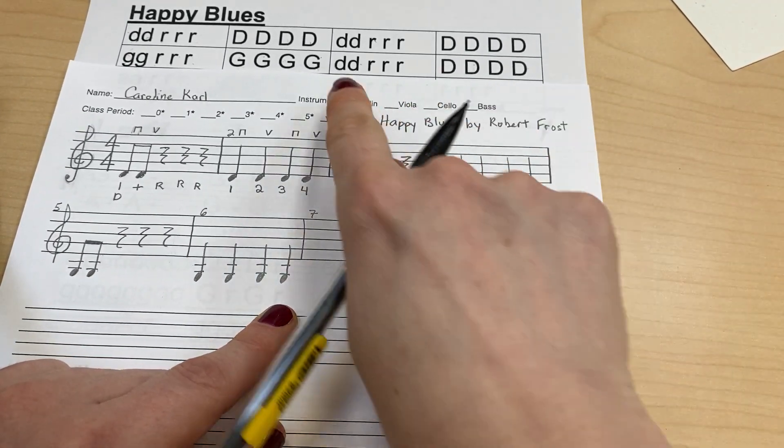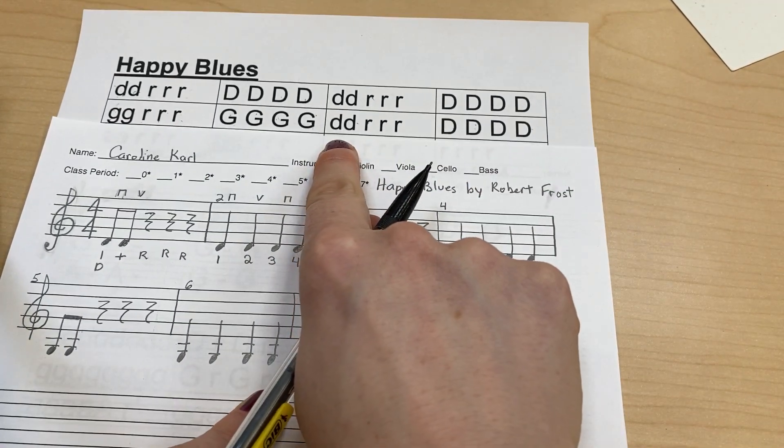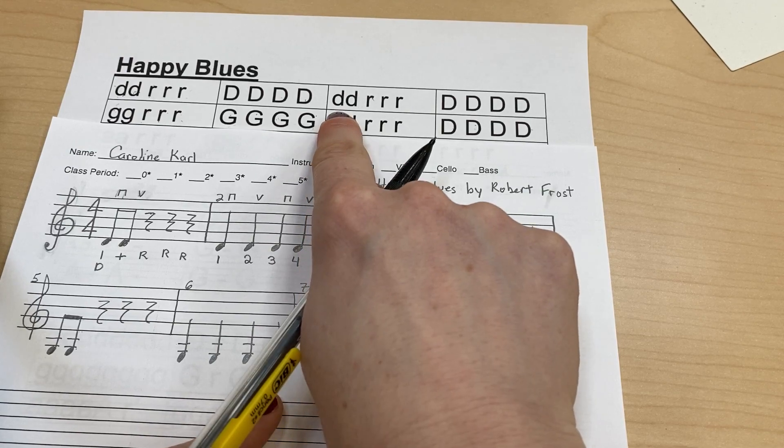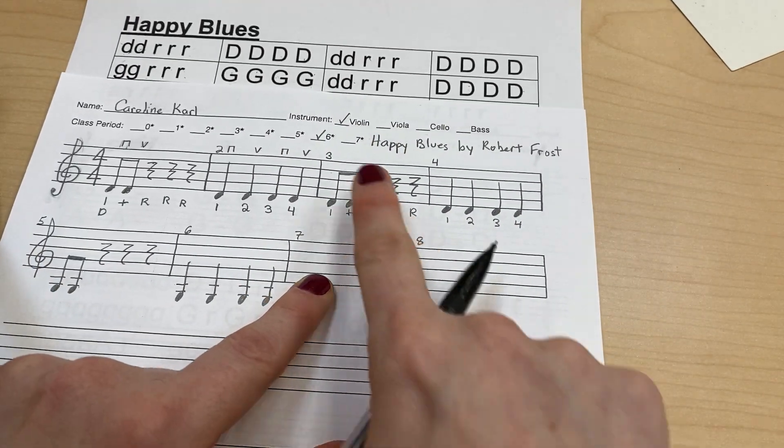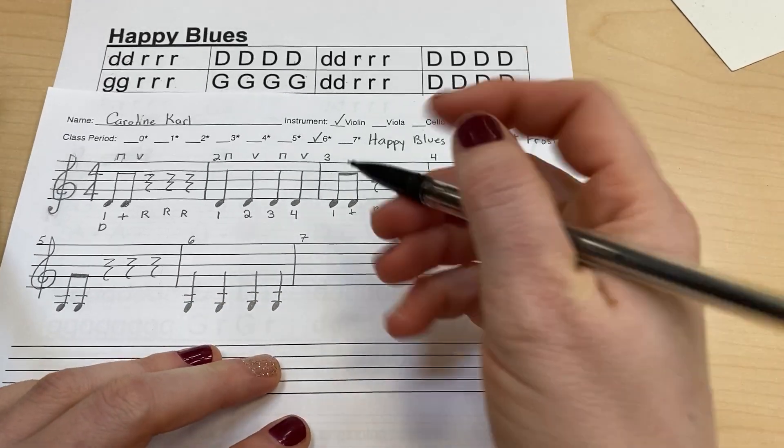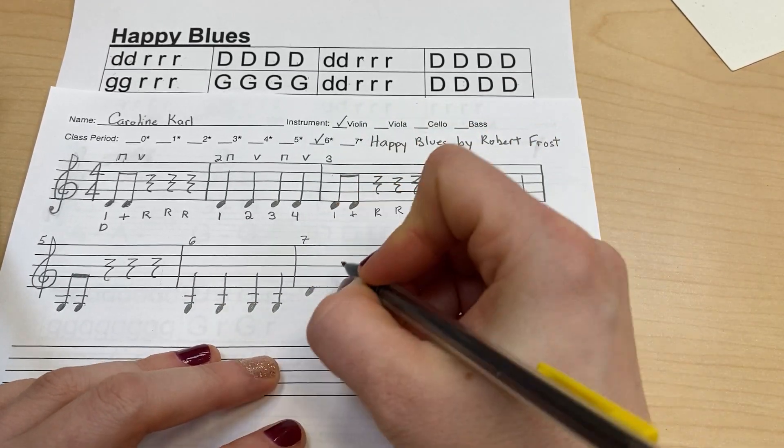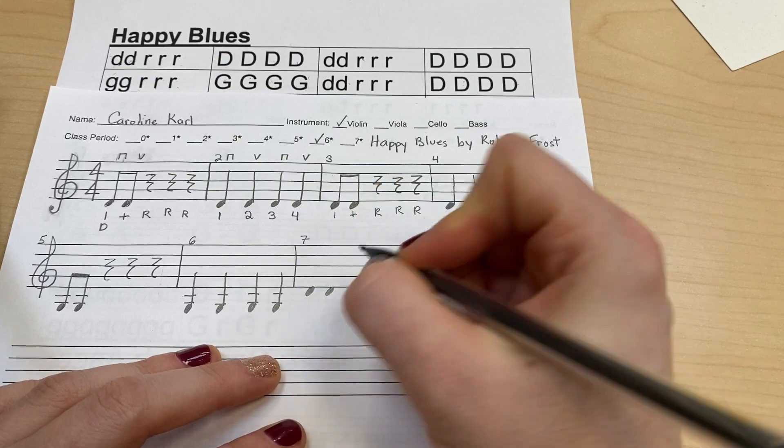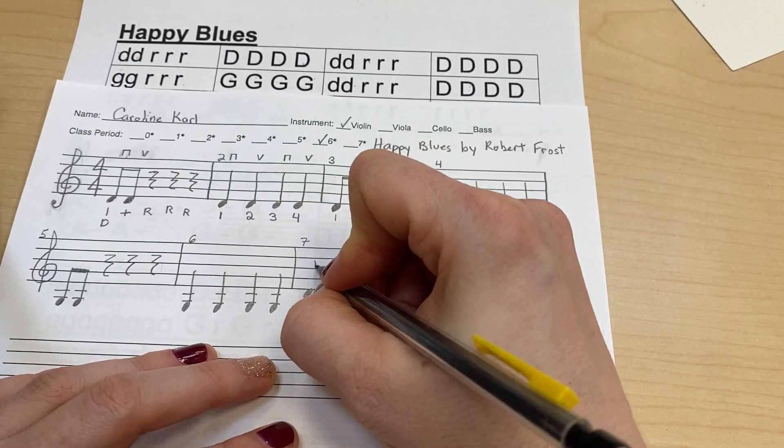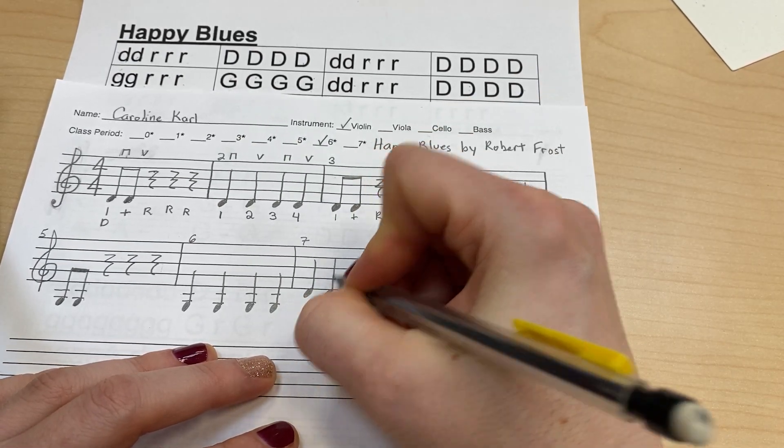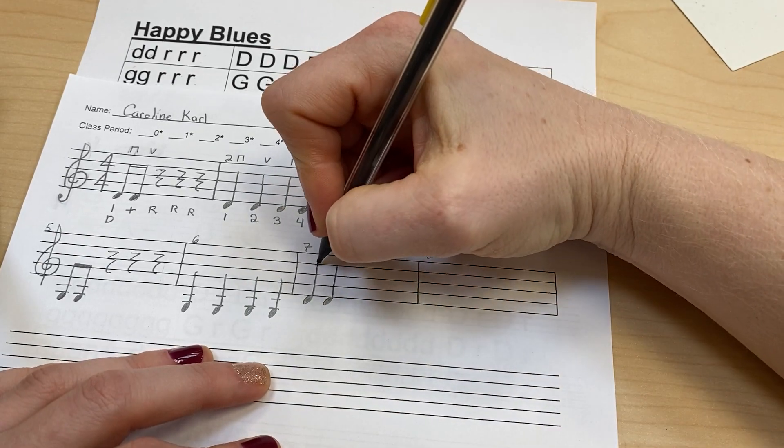Now the hard part is done, because let's look. Line two here, this is the same as line one. So all I have to do in these two measures is copy these two measures. So I'm going to do Ds, and then another D, and then put my bar lines on, and connect them for eighth notes.